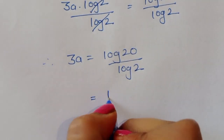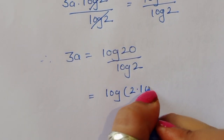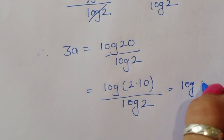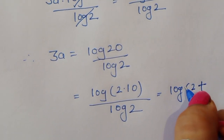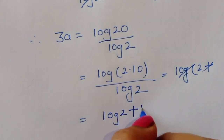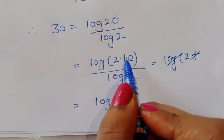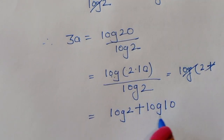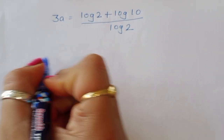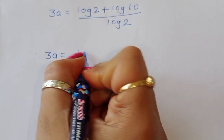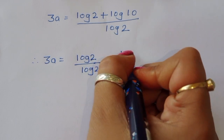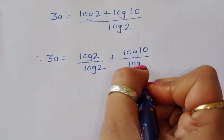Now log of 20 we can write as log of 2 times 10, which is log of 2 plus log of 10. So we have log of 2 plus log of 10, divided by log of 2. Therefore we can write 3a is equal to, separating this term: log of 2 divided by log of 2 plus log of 10 divided by log of 2.